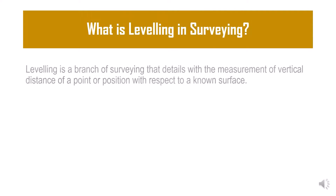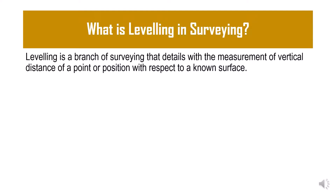What is leveling in surveying? Leveling is a branch of surveying that deals with the measurement of vertical distance of a point or a position with respect to a known surface. So here we are locating a particular point in terms of its vertical distance from a surface of known reference. We measure the vertical distance of that particular point from a line AB, and this is the process of leveling that is performed in surveying.